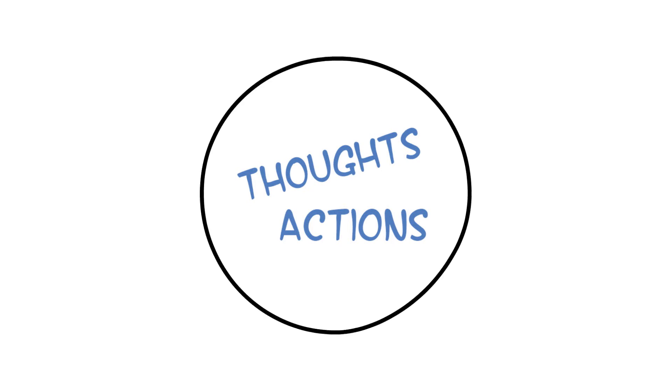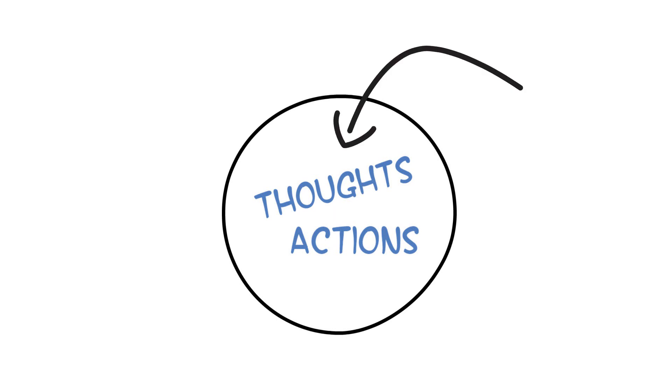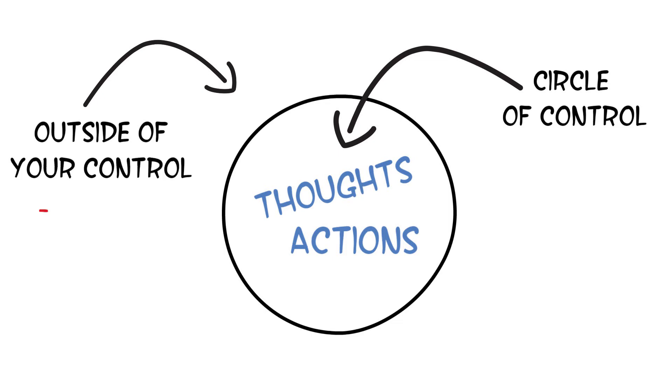And the final Stoic practice is the dichotomy of control. Stoicism teaches you that the only thing you can control are your thoughts and your actions. Everything else is outside of your control or, as Epictetus calls it, our reasoned choice. Therefore, whatever is outside of your control is not worth the energy you spend on worrying about it.